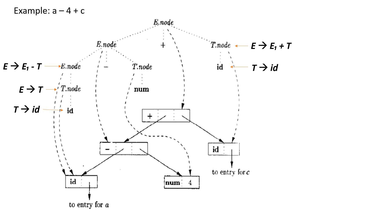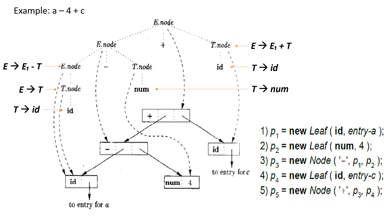Now, if the rules are evaluated during a post-order traversal of the parse tree or with reductions during a bottom-up parse tree, then the sequence of steps shown below end with p5 pointing to the root of the constructed syntax tree.